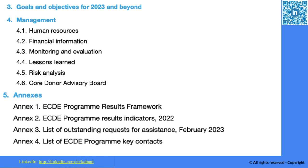The fourth chapter is mostly about human resources, financial information, and the monitoring and evaluation system. An important element of this chapter is the lessons learned, which are very valuable. They have also conducted risk analysis that you can read through, giving you a lot of information about how the program operates.